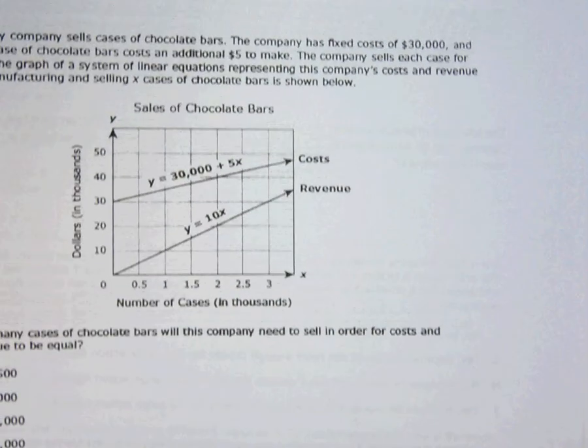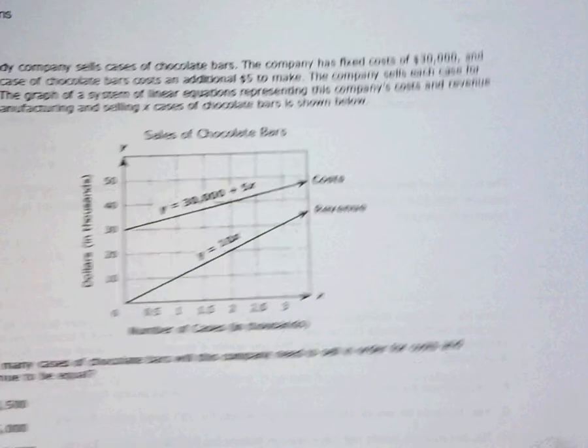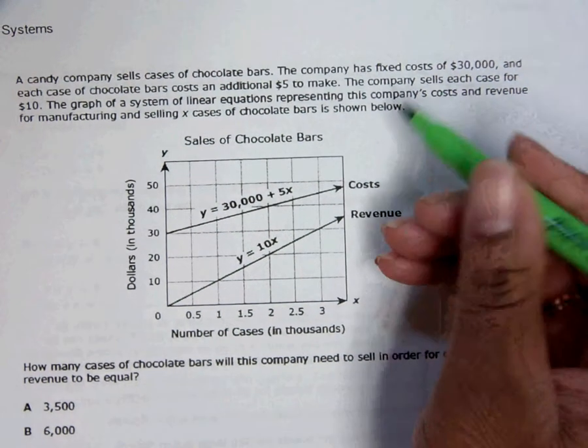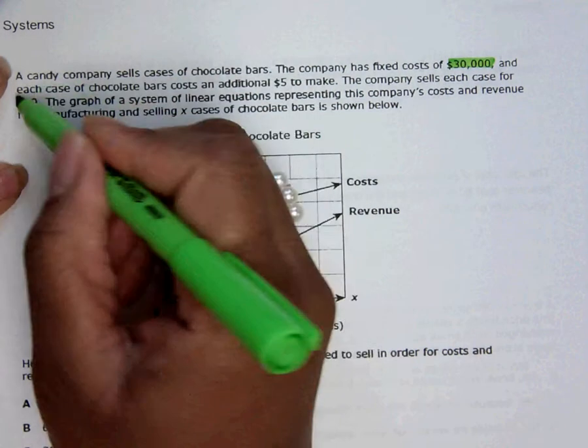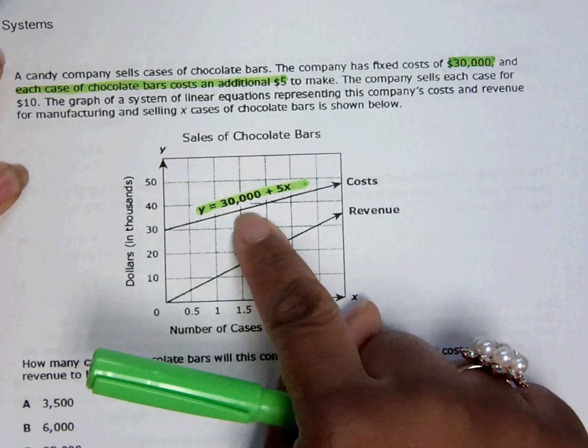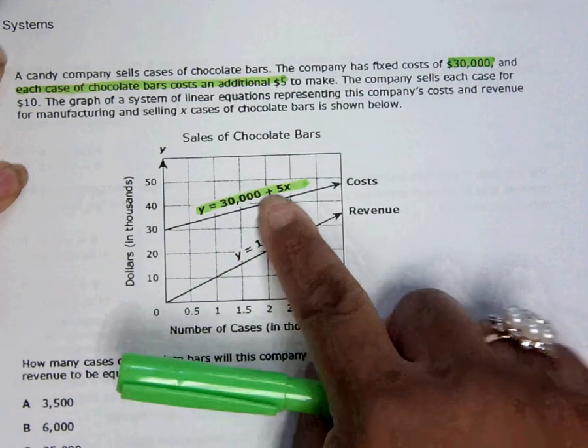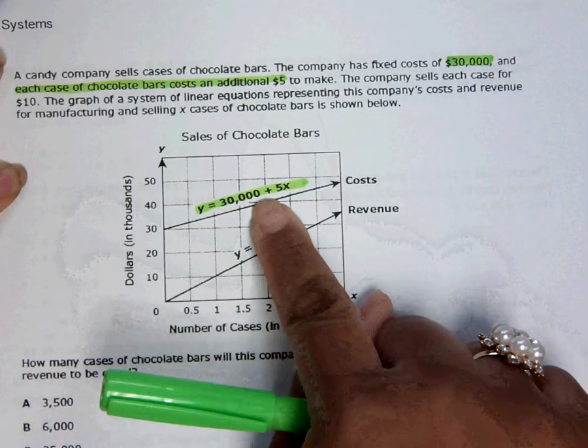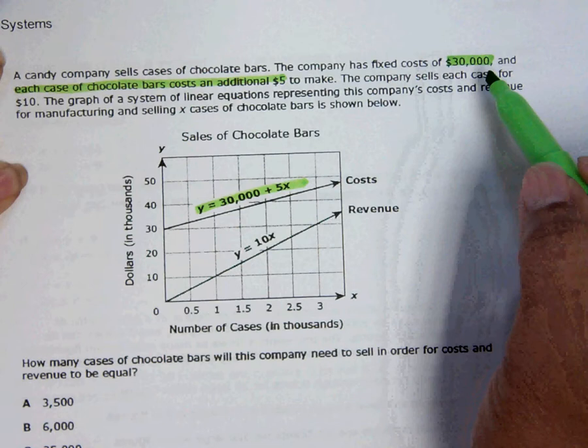Now we look at this question. A candy company sells cases of chocolate bars. The company has fixed costs of $30,000, and each case of chocolate costs an addition of five to make. I need to explain to you that when it says $30,000 and then each case is an addition of five, it's describing the equation. So $30,000 plus each case of chocolate bars would be $5. There it is.